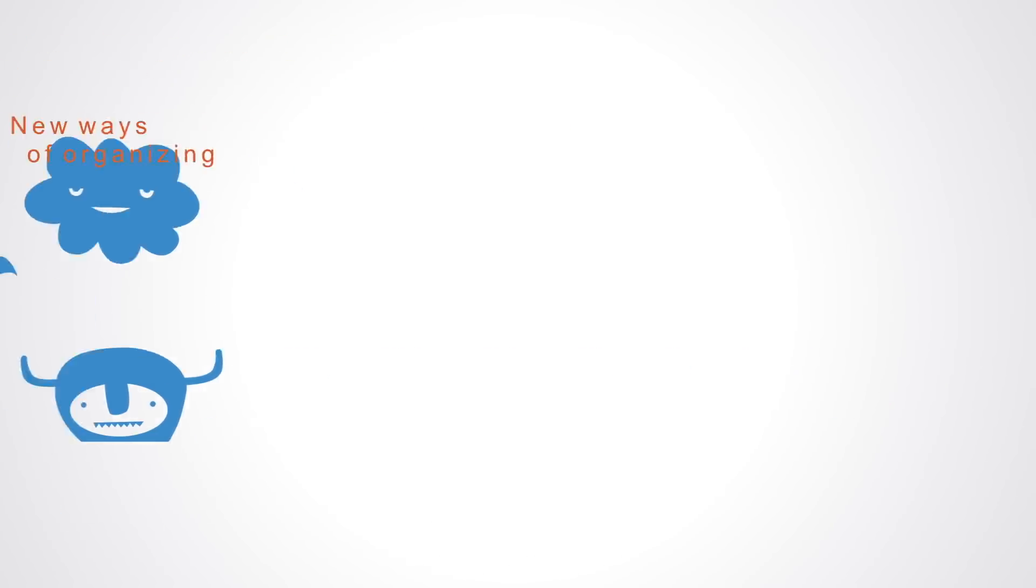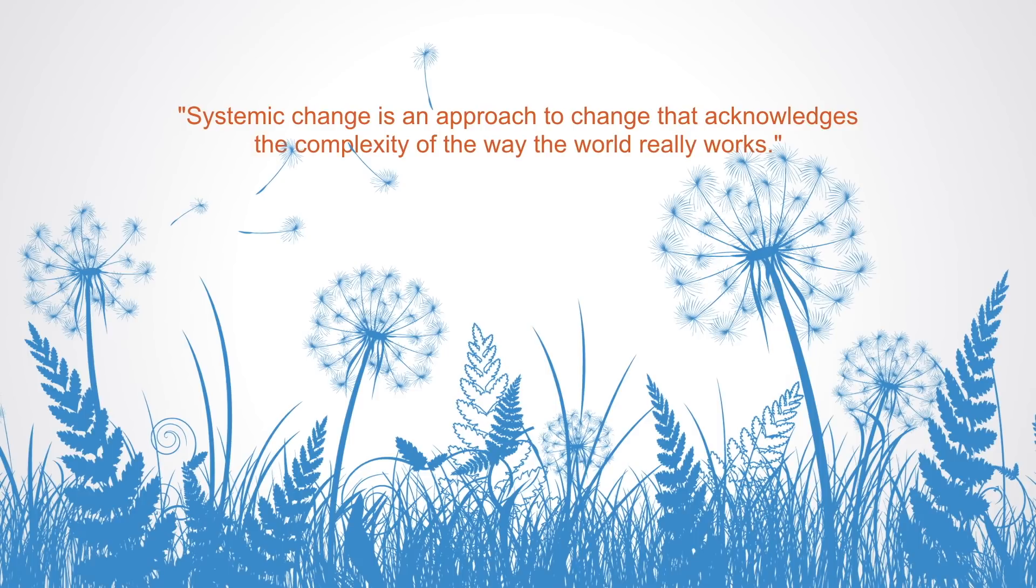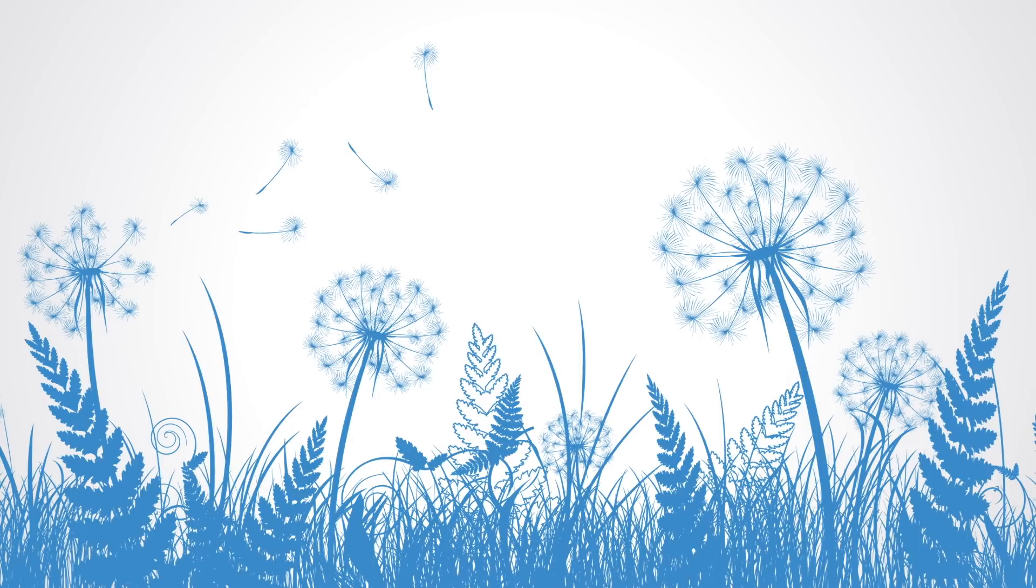As Kyle Peck says, systemic change is an approach to change that acknowledges the complexity of the way the world really works. Systems change embodies this realization and draws upon a new set of ideas from complexity and systems thinking to provide an approach that is more appropriate given the complexity of these issues.